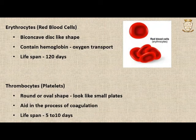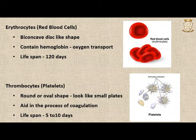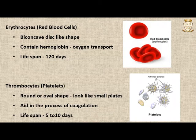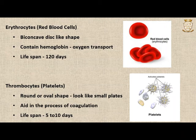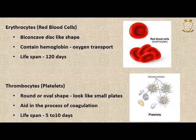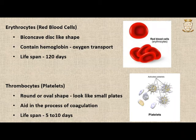Thrombocytes, also known as platelets, have a round or oval shape and are termed platelets because they look like small plates. The main function of platelets is to aid in the process of coagulation or blood clotting. When any damage occurs to the vessels, the platelets release factor X, which in the presence of calcium reacts with a blood protein known as prothrombin, converting it to thrombin. Thrombin then converts fibrinogen to fibrin, which forms a mesh-like fibrin clot that stops bleeding.